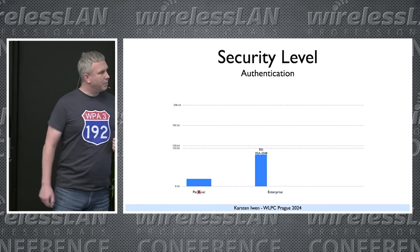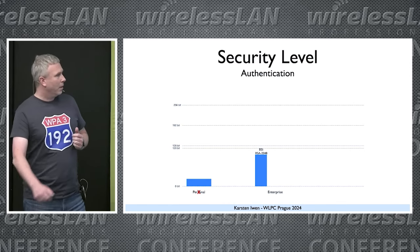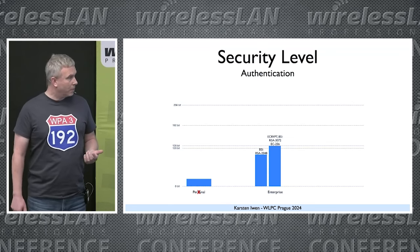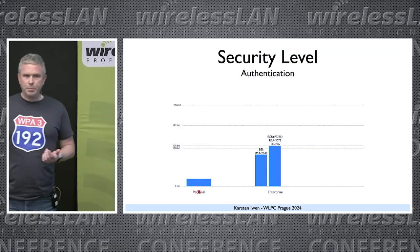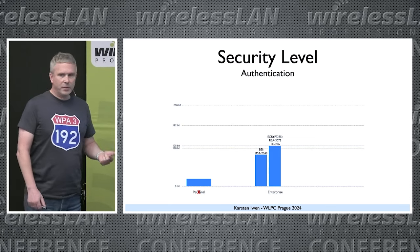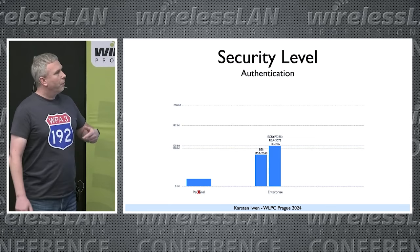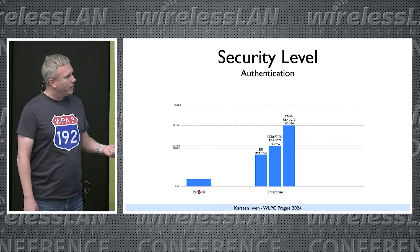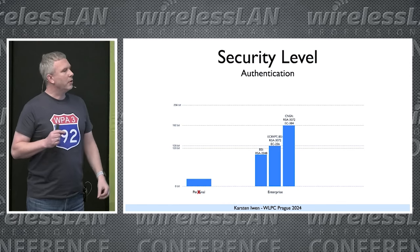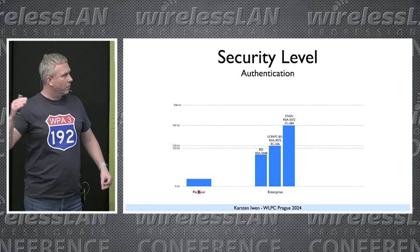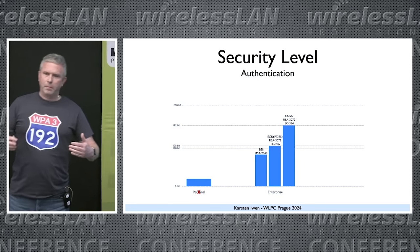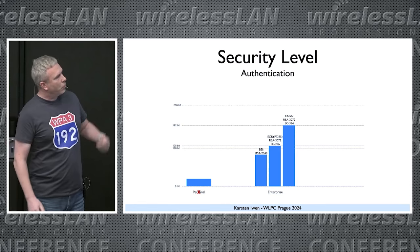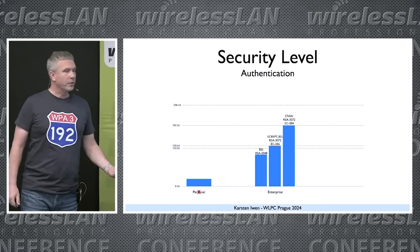If we want to reach the 128-bit security level, both BSI and eCrypt recommend using either elliptic curves with 256 bits or RSA with 3072 bits. For 192-bit security level, CNSA sees the same RSA key size at this higher security level — so the interpretation of RSA security differs here. But we could also use elliptic curves with 384-bit.